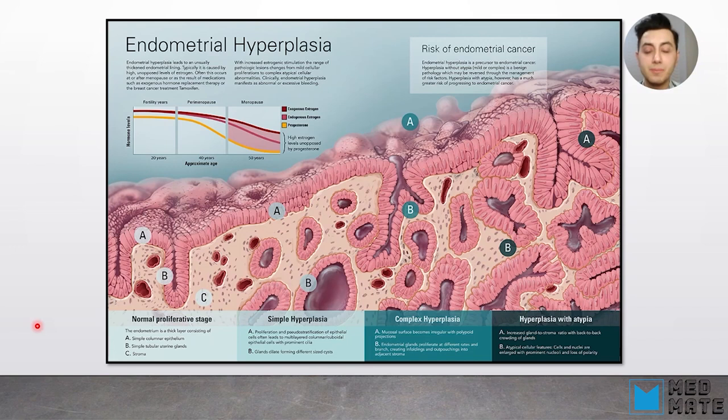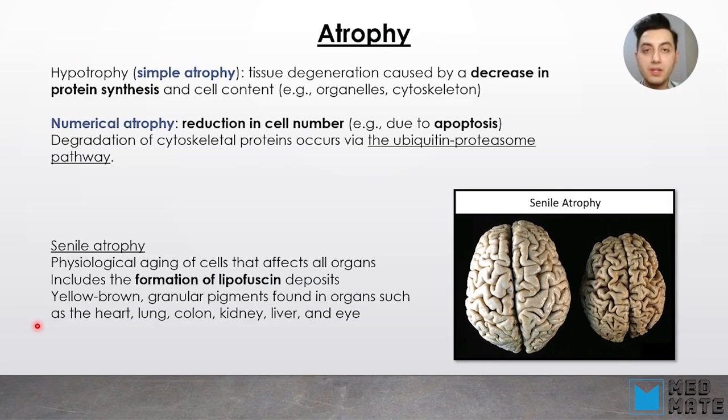Endometrial hyperplasia, however, can lead to cancer if the precursor stimulus persists. It first presents as simple hyperplasia, then proceeds to complex hyperplasia, then atypical dysplasia, and eventually cancer.